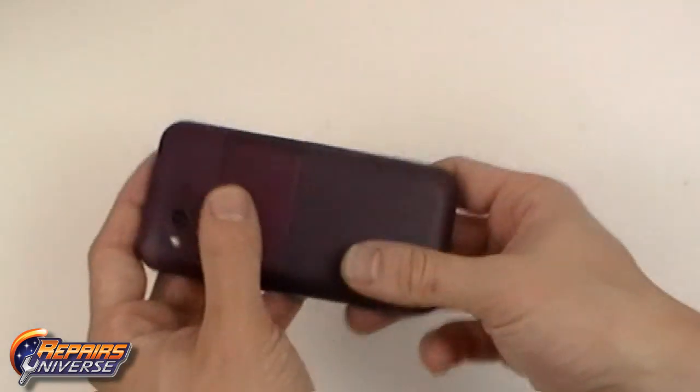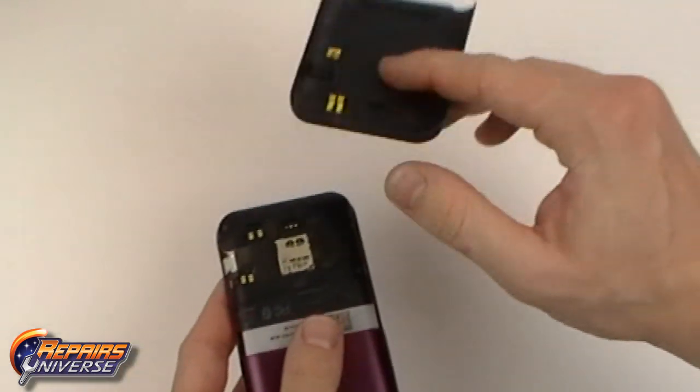This is the HTC Rime Take-Apart Repair Guide. The first step will be to remove the bottom back battery cover.